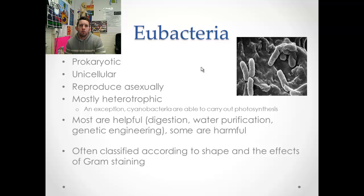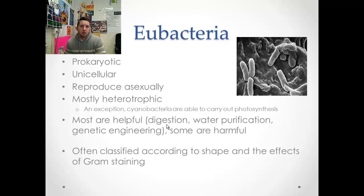Most eubacteria are heterotrophic. We talked about the autotrophic cyanobacteria, which are why we are here — why the Cambrian explosion happened. They introduced oxygen into our atmosphere and created the ozone layer. Most eubacteria are helpful, such as aiding digestion in our guts. Some of them can live in extreme conditions, though they're not the extremophiles — we'll cover that with archaebacteria. They're very useful in water treatment plants.